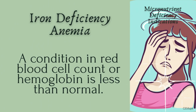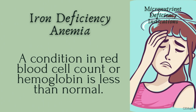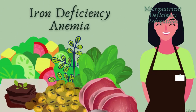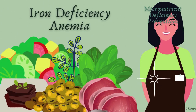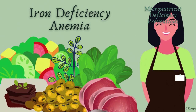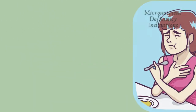Iron deficiency anemia is a condition in which red blood cell count or hemoglobin is less than normal. It results in retarded physical growth, low resistance to infections, and slow developmental learning abilities. For prevention, you need foods such as dark green leafy vegetables, legumes, red meats, and iron-fortified food.